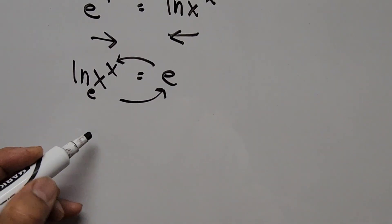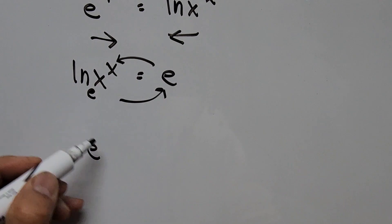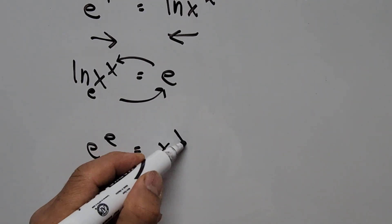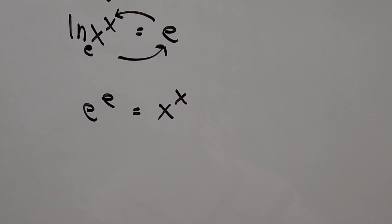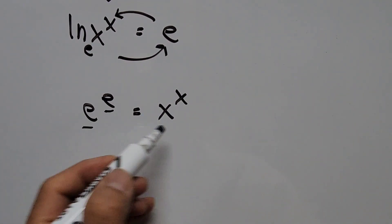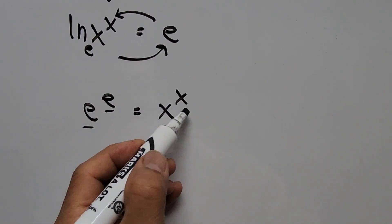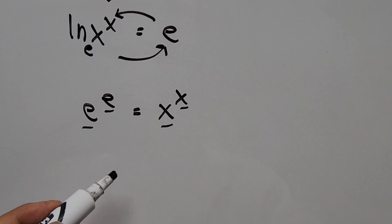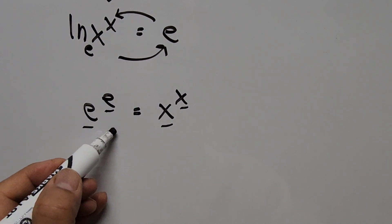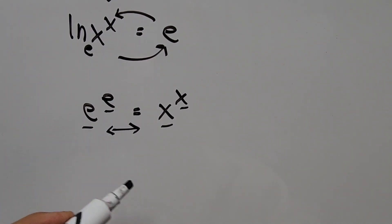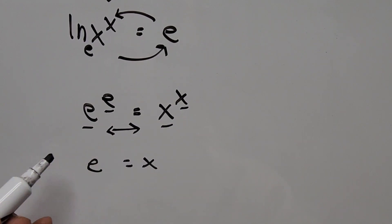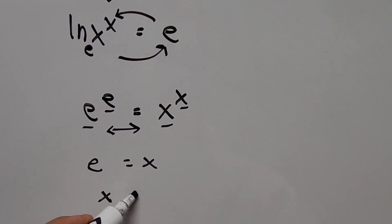This gives us e to the power of e equals x to the power of x. Now notice the base is the same as its exponent — on the left side, base e has exponent e; likewise on the right, base x has exponent x. By comparison or correspondence, e equals x, or equivalently x equals e. That's our final answer.